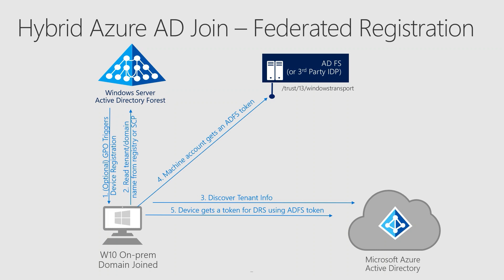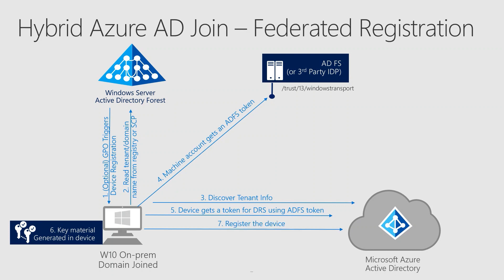It's worth noting that this step and all the steps below happen in the context of the local system on the workstation itself. This implies that if you have any outbound proxies in your environment or you're filtering on the edge of a network, you will need to allow either computer account authentication or whitelist the outbound traffic to Azure. The necessary ports and URLs to be whitelisted are documented and you can find them in the links below. To bootstrap the device into Azure Active Directory, cryptographic material for the device key and transfer key are created on the device's TPM. These keys, in addition to the previously issued token for the Azure Device Registration Service, are used in a certificate request to register the device into Azure Active Directory.